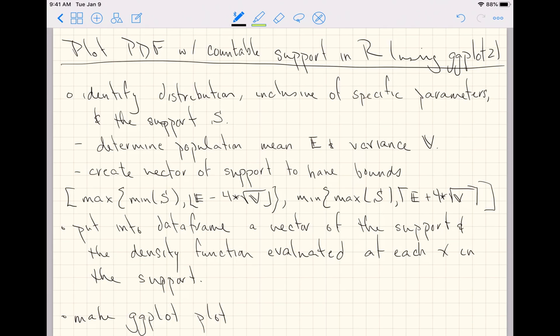On the left-hand side, it looks like a capital L facing forward and backwards surrounding the E minus 4 times the square root of E. That's saying to round down. That is a function built into R named floor.